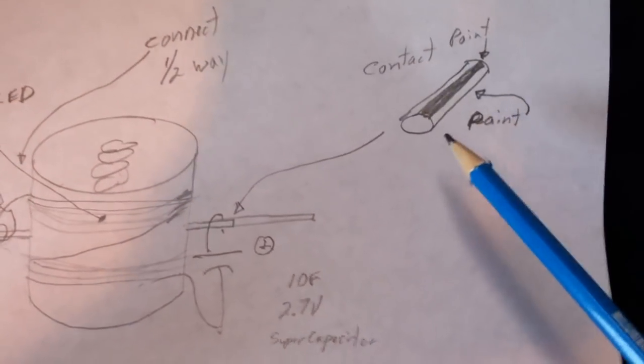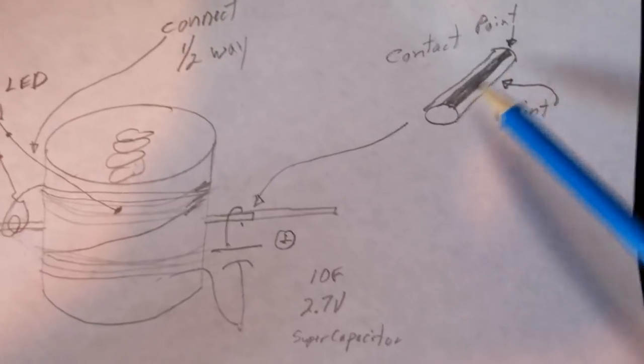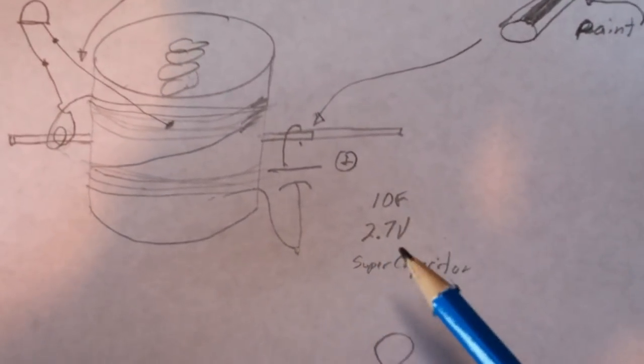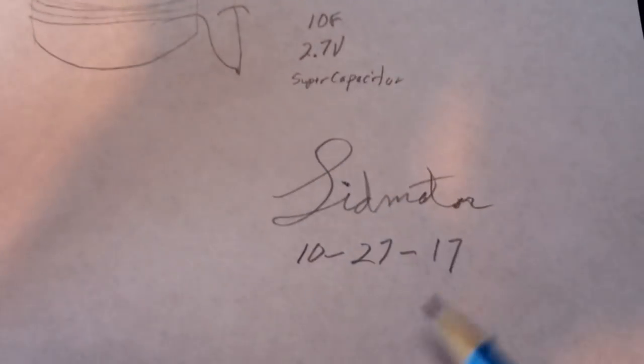And what you do is you paint the shaft and then make an open area right there where the contact takes place. And this is just a 10-farad, 2.7-volt supercapacitor.